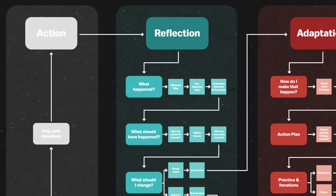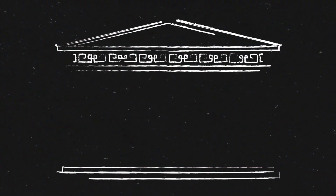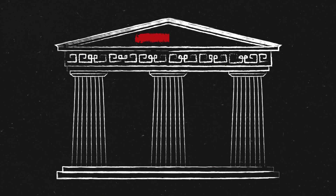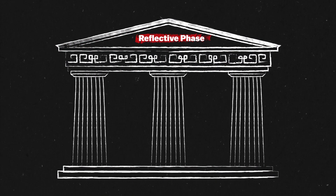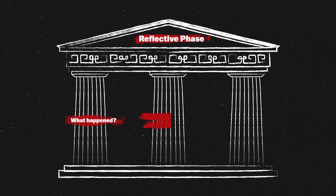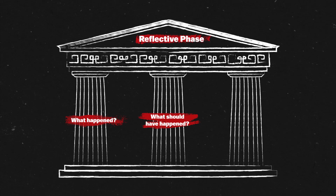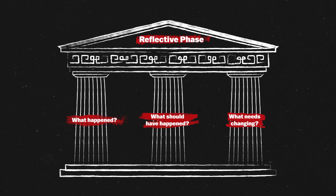Henry has identified an action that he wants to analyse. It's now time to reflect on this action. The reflection phase is held up by three pillars that we need to address. First, what happened? Second, what should have happened? And third, what do I need to change for the future?